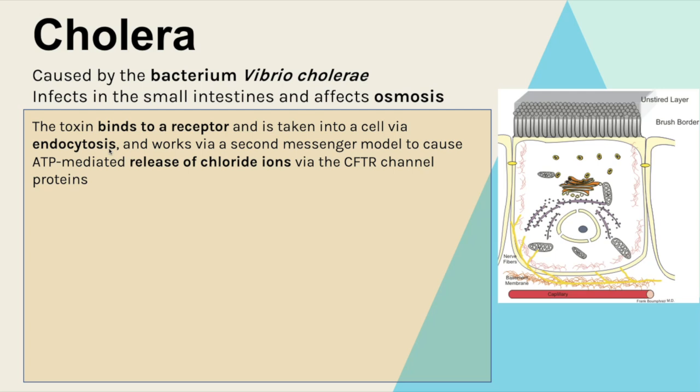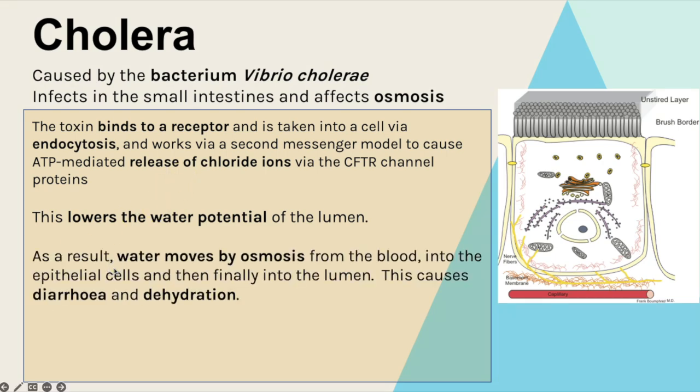The way this happens is cholera releases a toxin which will bind to a complementary shaped receptor and it is then taken into the cell via endocytosis. Once it is within the cell it works via a second messenger model and it causes ATP-mediated release of chloride ions via a protein channel called the CFTR channel proteins. Now you've got all of those chloride ions have been released into the lumen, this lowers the water potential of the lumen and as a result water moves by osmosis from the blood into the epithelial cells and then finally into the lumen. And now you've got all of this excess water in the lumen, this causes diarrhea but also it means your cells are going to be dehydrated as well.